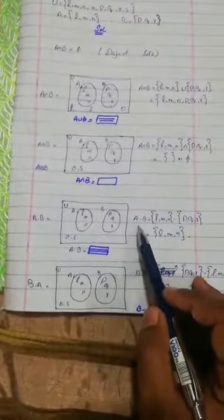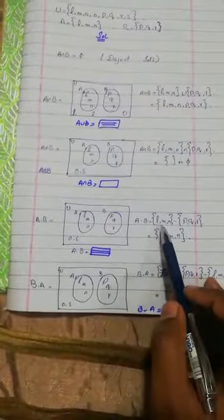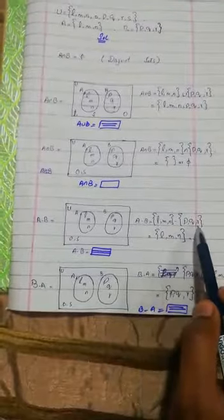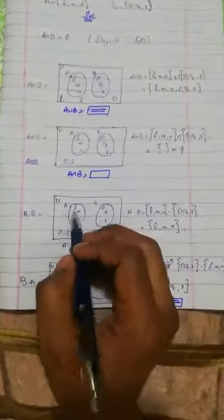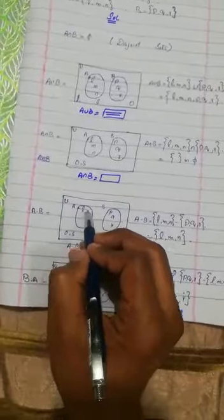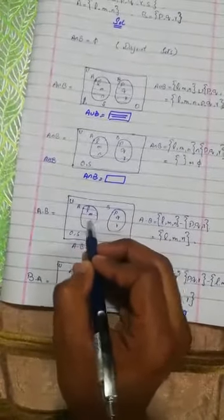So the representation is as it is. There will be no region shaded because the result is an empty set. Here I have done A intersection B equals empty set. Next is A minus B.